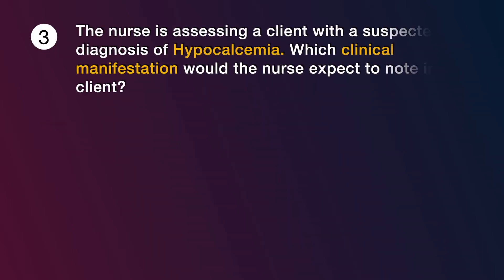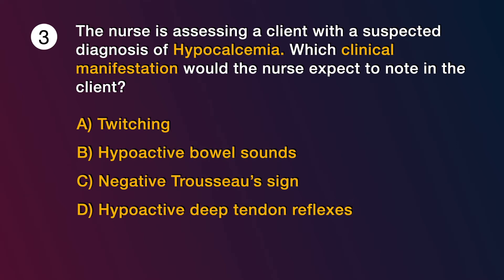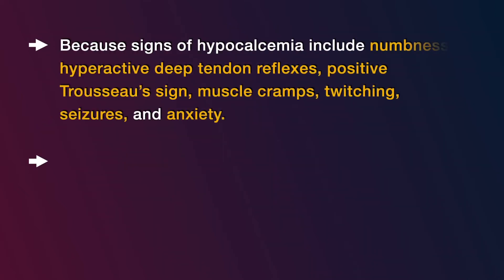Question number 3: The nurse is assessing a client with a suspected diagnosis of hypocalcemia. Which clinical manifestation would the nurse expect to note? Options are: A) twitching, B) hypoactive bowel sounds, C) negative Trousseau's sign, D) hypoactive deep tendon reflexes. The answer is A, twitching, because signs of hypocalcemia include numbness, hyperactive deep tendon reflexes, positive Trousseau's sign, muscle cramps, twitching, seizures, and anxiety.